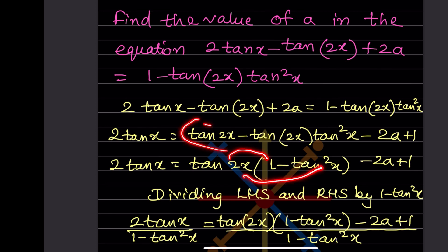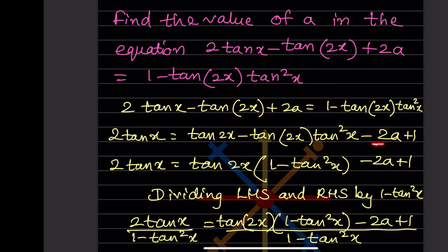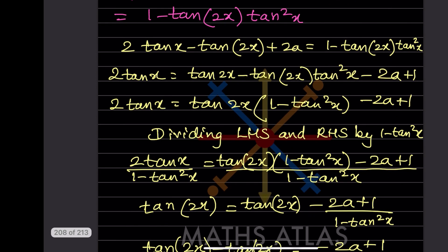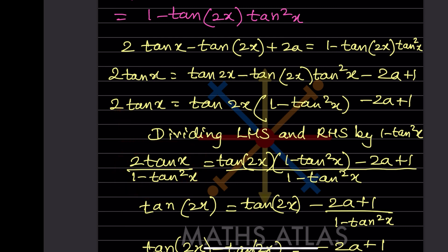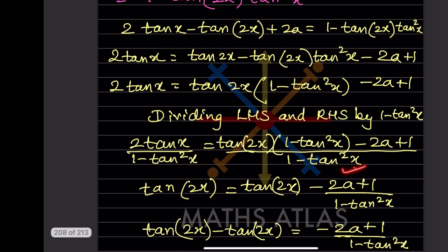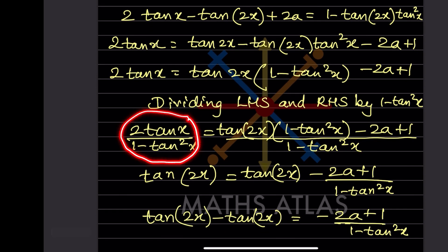We divide both sides by (1 - tan²x). The left side becomes 2tanx/(1 - tan²x) = tan2x by the double angle formula. The right side is also divided through by (1 - tan²x).